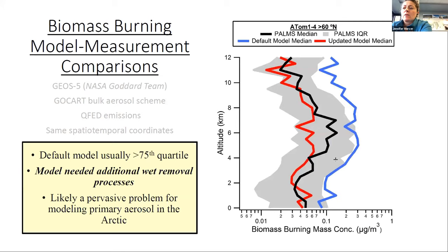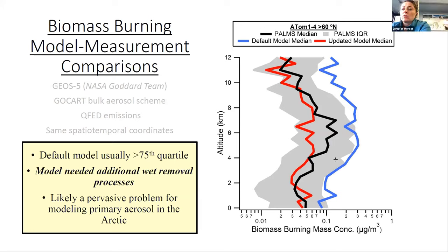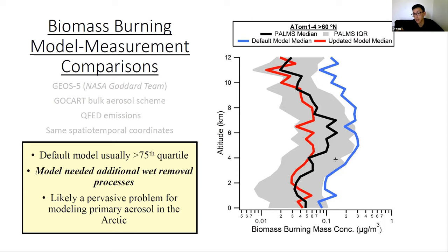Question: What causes the big gap between about 5 and 7 kilometers in the model comparison? The answer is that it could be many things — emissions, removal, or transport. We tested both QFED and FEER emissions datasets and didn't see a lot of difference between them. The updated model isn't just for the arctic; it applies to all ATom observations, minimizing bias across the full dataset.